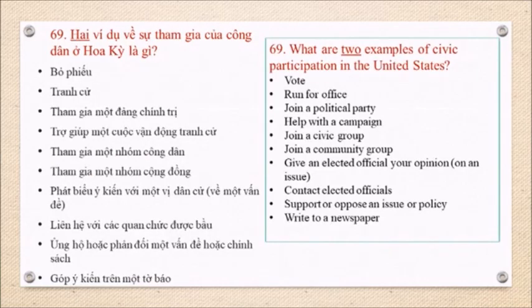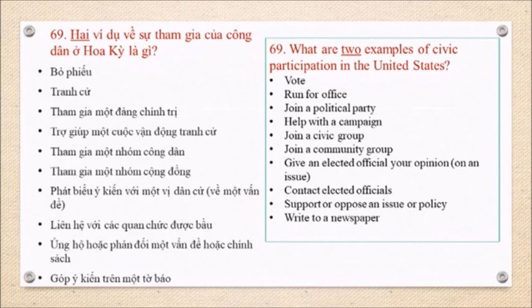Question 69: What are two examples of civic participation in the United States? Vote. Run for office. Join a political party. Help with a campaign. Join a civic group. Join a community group. Give an elected official your opinion on an issue. Contact elected officials. Support or oppose an issue or policy. Write to a newspaper.